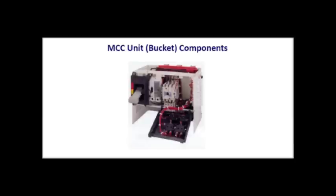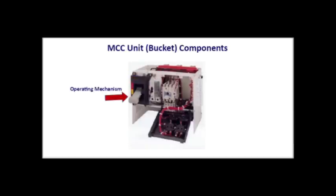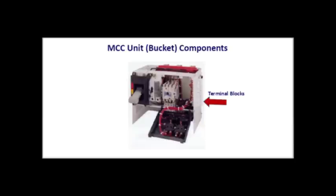Now let's take a closer examination at the components that make up a bucket. First, there is the disconnect switch, which could be either a circuit breaker or a fuse disconnect switch. The mechanical unit latch serves as an interlock mechanism preventing the door from opening when the circuit breaker is in the closed position. There is the operating mechanism which turns the breaker on and off and also goes into the trip position when the breaker trips. There is the motor starter itself, pilot devices such as the start-stop push button, selector switch, and indicating lights. Terminal blocks are usually mounted on the side of the bucket.